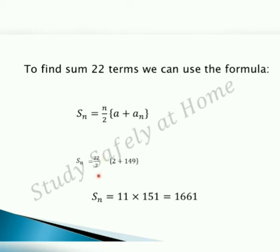So a plus aₙ is 2 plus 149, which equals 151. And 22 divided by 2 is 11. So 11 times 151 equals 1661. Very easy.